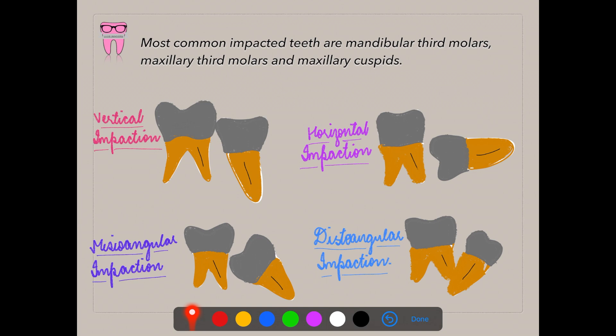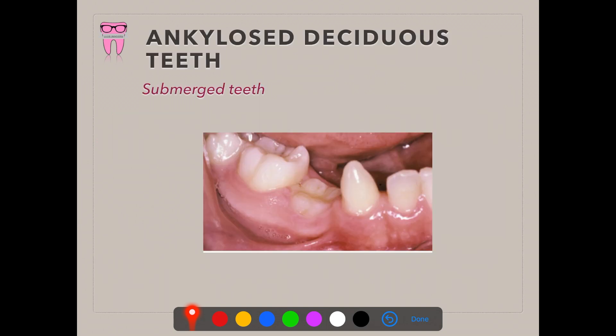Multiple unerupted teeth are also known as pseudo anodontia, as already discussed. Now, ankylosed deciduous teeth — also known as submerged teeth — most commonly affects the last molars in the primary dentition. The root of the tooth undergoes a variable degree of resorption, and the remaining root fuses with the surrounding bone, giving the tooth a sunken appearance well below the normal occlusal plane, hence the name submerged teeth.